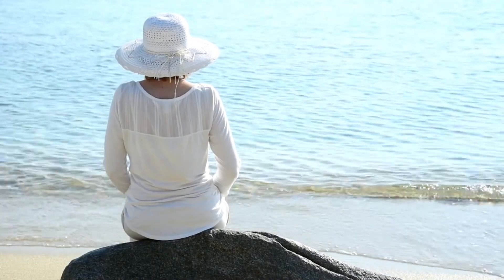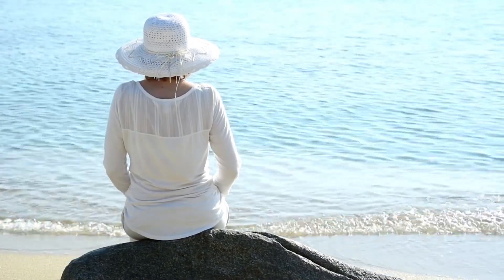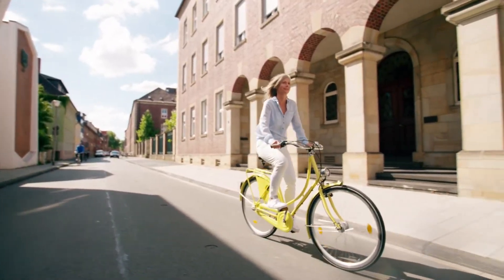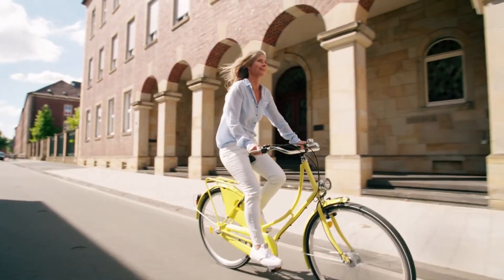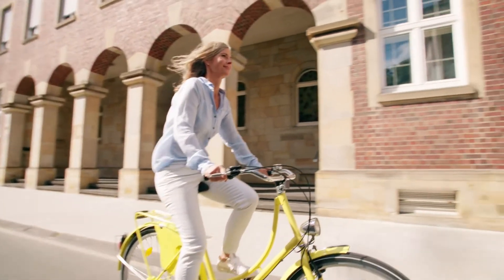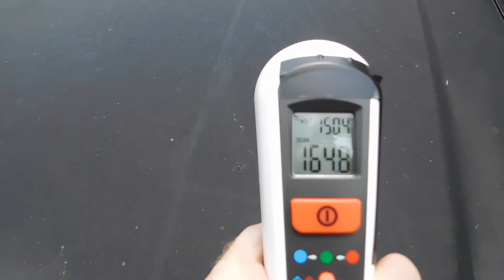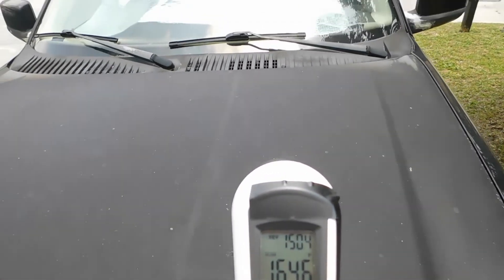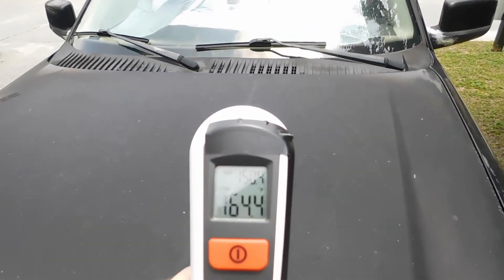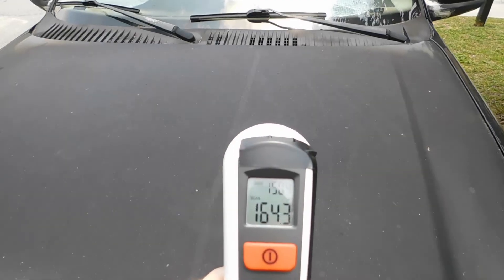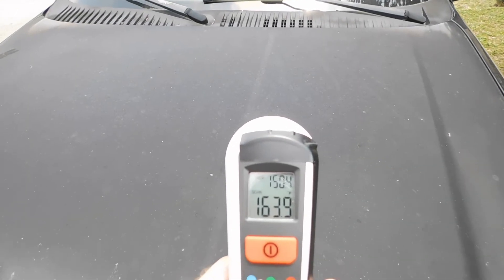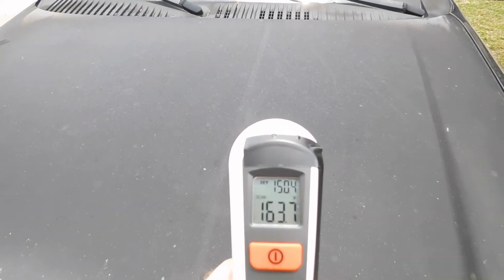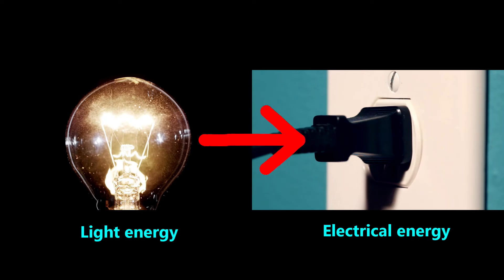White reflects all light colors, so it absorbs no light energy. That's why we often wear white clothes as a way to stay cool on hot days. In contrast, black reflects no light, so it absorbs all light colors. After absorbing all light colors, this paint converts that light energy into heat energy.